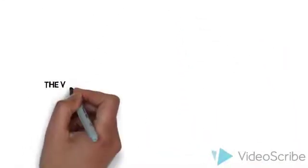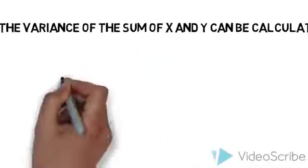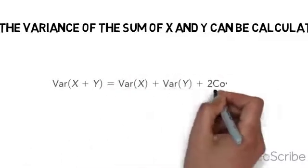The variance of the sum of two random variables can be calculated. Covariance is included because it captures the effect of dependence on the variance of the sum.